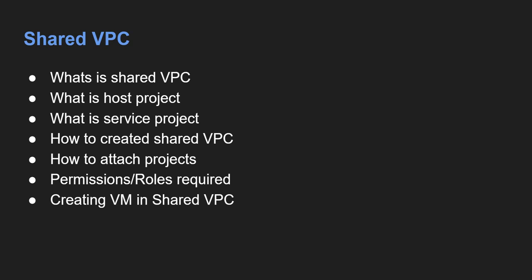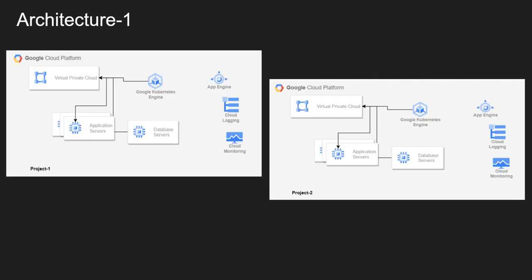Before starting, let's see what a shared VPC is. Take an example — as an architect, I am working on designing an application in Google Cloud. In Architecture One, I am creating a single virtual private cloud and creating some virtual machines for my application as a web server, then a few more VMs for my database servers, and in the same project I have my GKE application or App Engine, and I am using Cloud Logging and Cloud Monitoring.